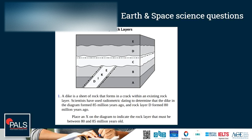Rock layer D formed 80 million years ago. The dike formed 85 million years ago, and from that we can deduce that we should place the X somewhere in rock layer C. That layer must have formed between 85 and 80 million years ago, since it's in between the dike and layer D.